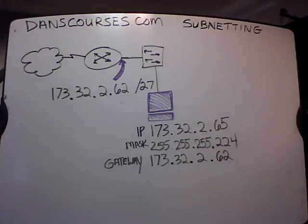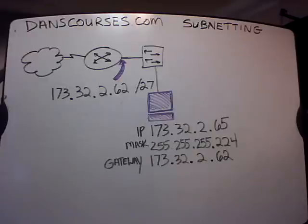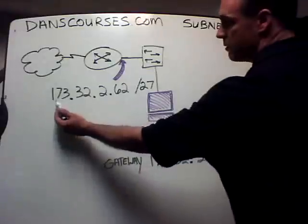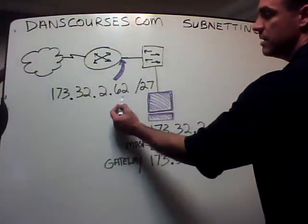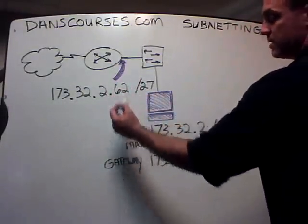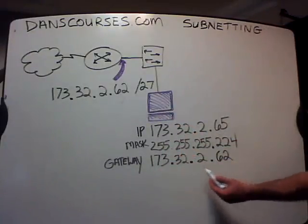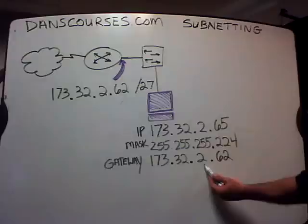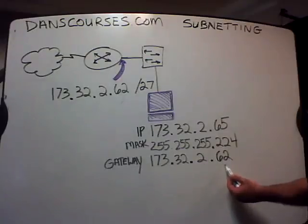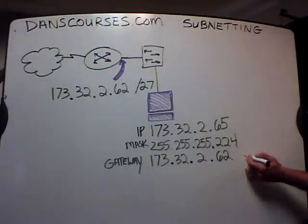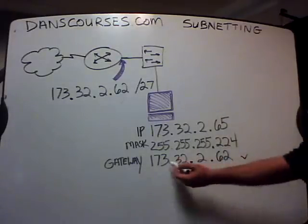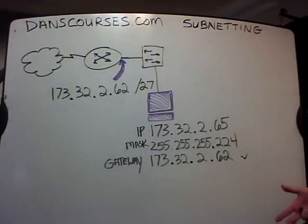So the question is: what is wrong in this scenario? I'm going to show you a strategy for how you answer this. First thing you look for is the obvious. The router's interface is 173.32.2.62 — the router is the gateway. Does the computer have the correct gateway? You'll see that it's 173.32.2.62. So the gateway is correct. Check — it's got the right gateway.